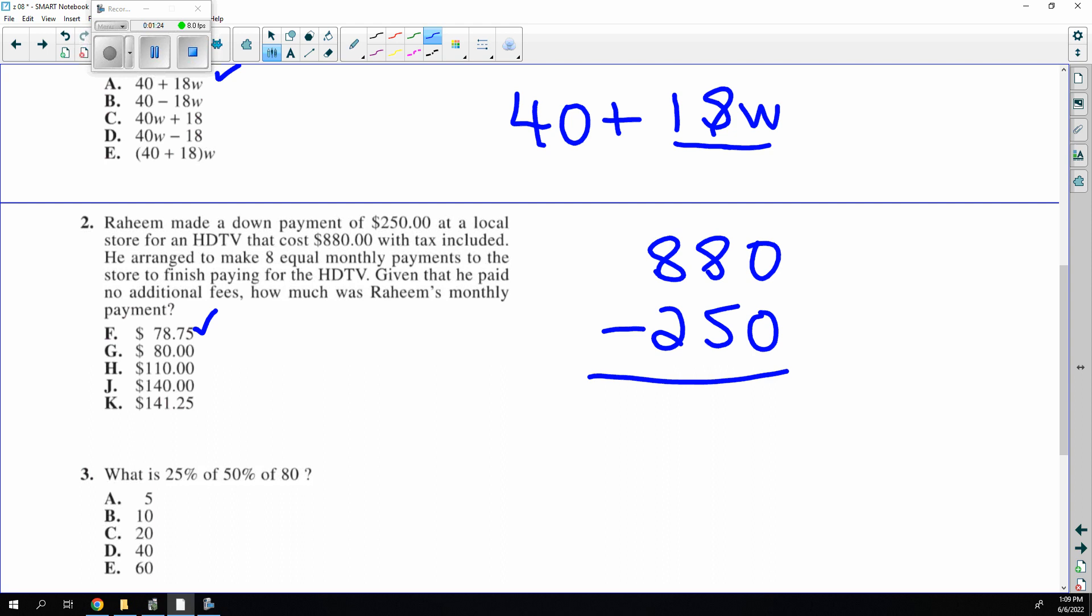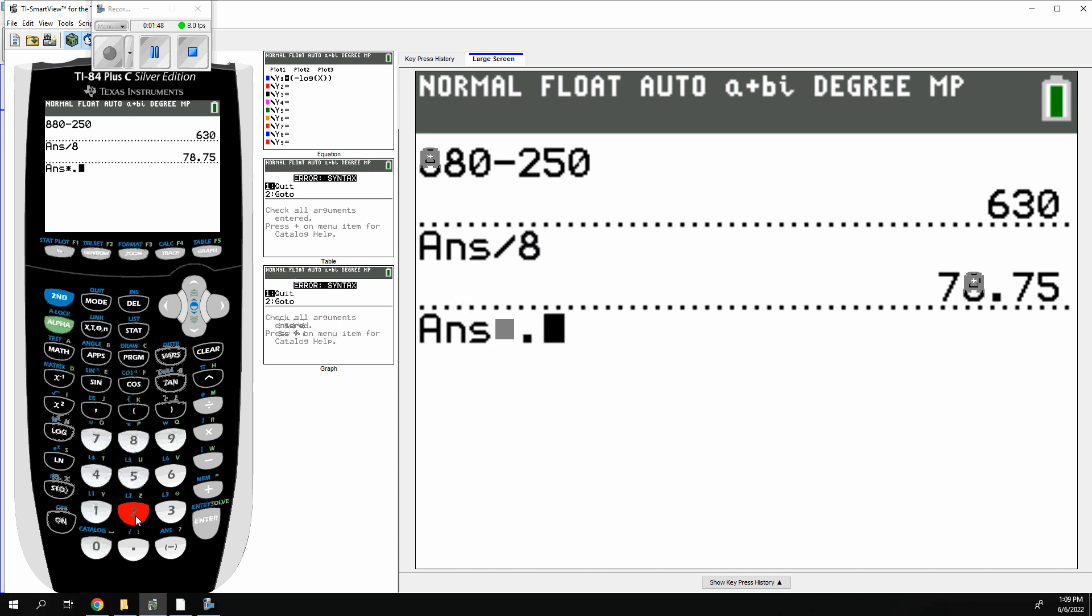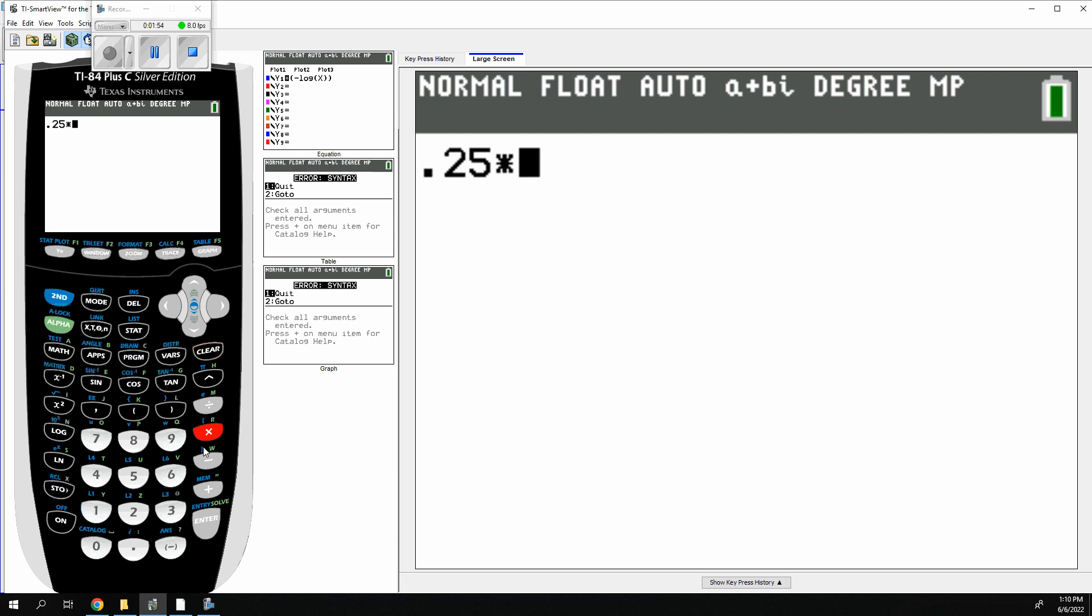This is a mathematical story. Whenever I hear what, I put X. What is 25%? That's 25 over 100 of 50% of 80. So of means times. You're just doing this monster multiplication and you can put your percent as 0.25 times 0.50 times 80 to get the right answer. And the right answer is 10.